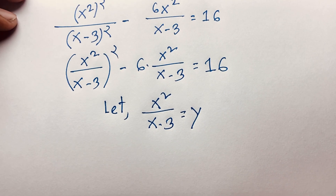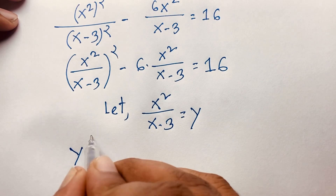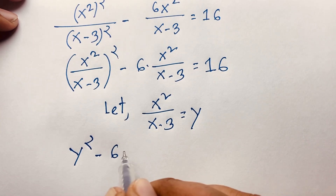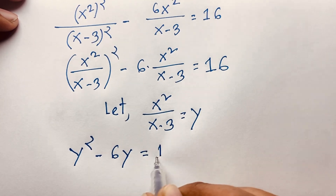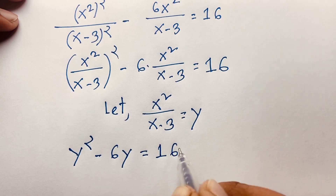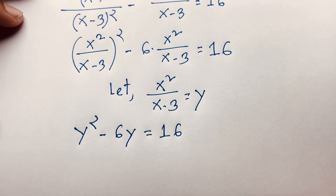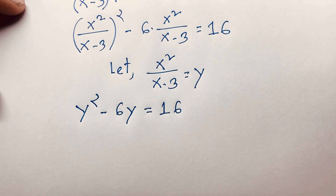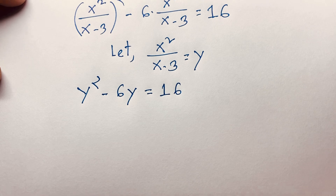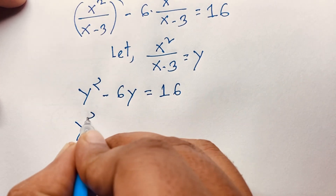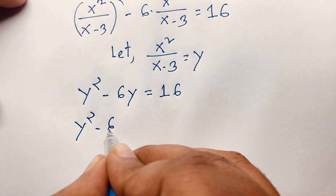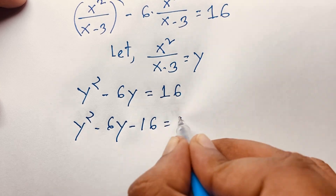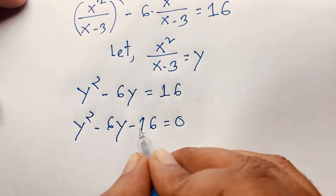So I can write this expression as y² minus 6y = 16. This is a nice quadratic equation, so it becomes y² - 6y - 16 = 0. I hope you understand.